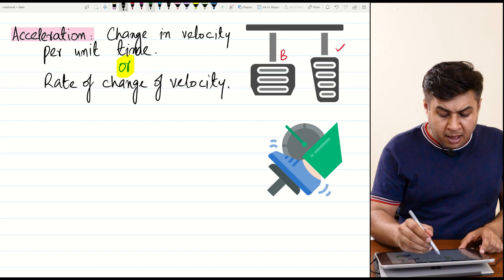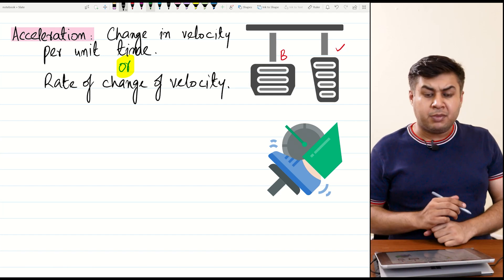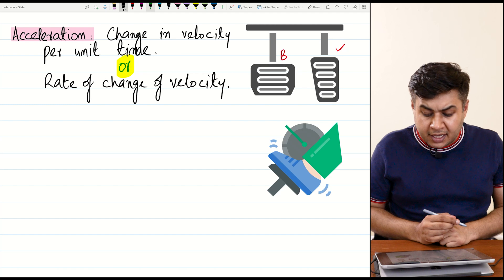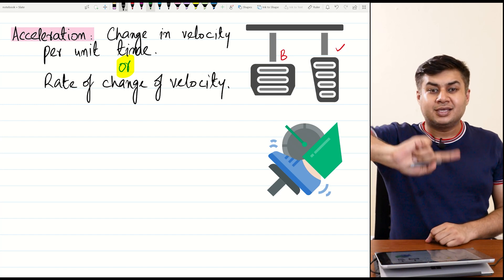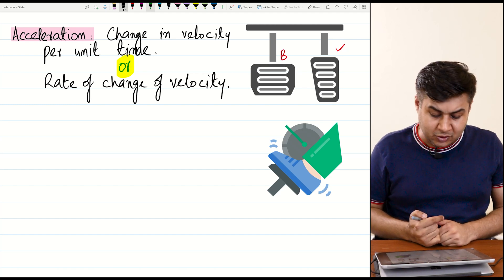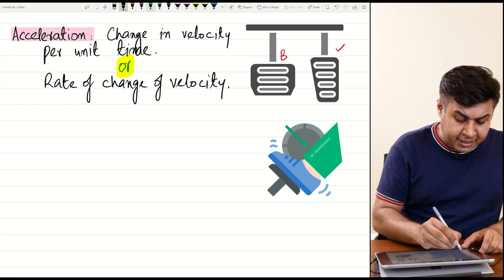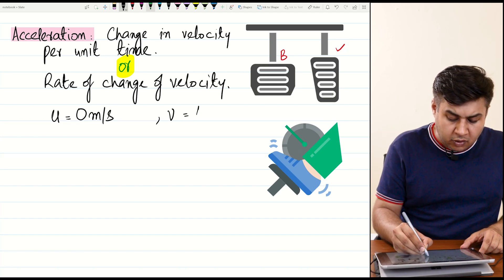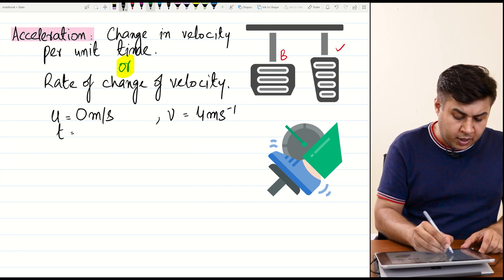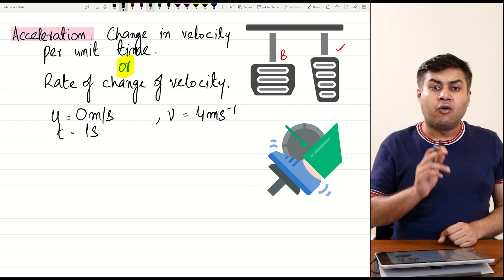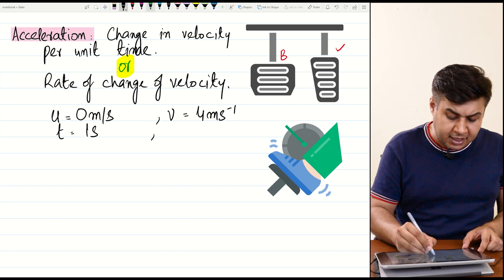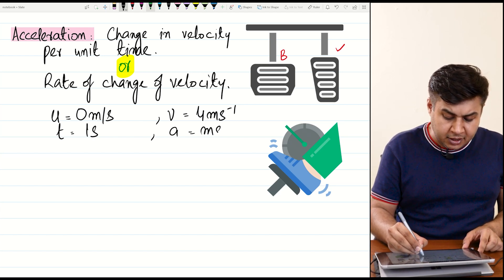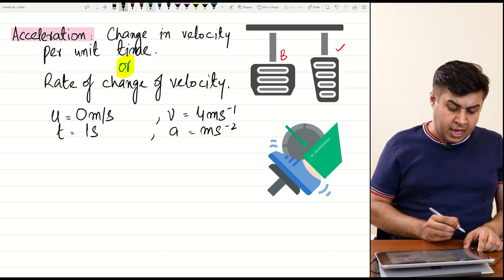Here is a simple example. A person presses the accelerator and the car accelerates. Suppose the car's initial speed is 0 meters per second, and after 1 second its speed is 4 meters per second. So in 1 second the speed has increased by 4 meters per second, giving an acceleration of 4 meters per second squared.